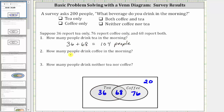Question two: how many people drink coffee in the morning? This is the set of coffee drinkers. There are 68 plus 76 people that drink coffee in the morning, and 68 plus 76 is equal to 144. So 144 people drink coffee in the morning.